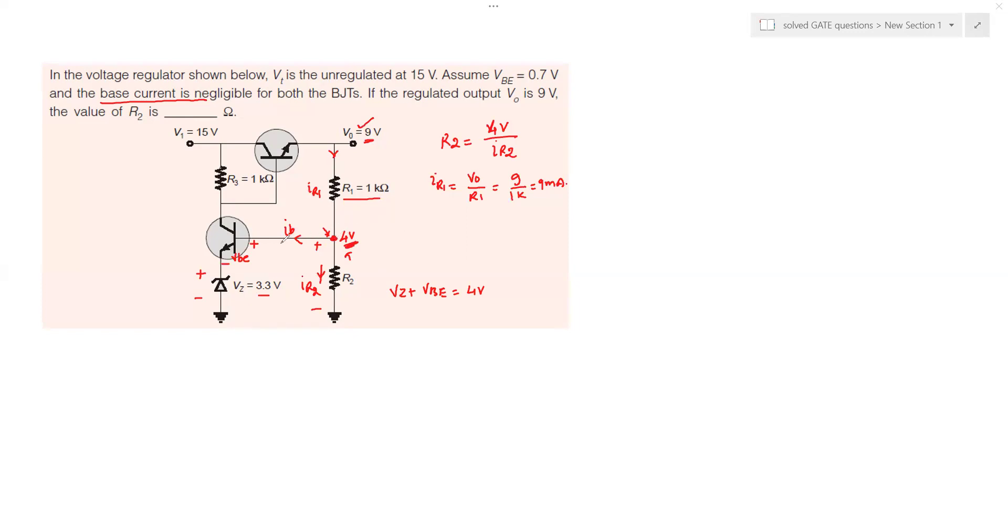Now since IB is negligible we can say that IR1 is approximately equal to IR2 and we have got the value of IR2. We know the value of voltage. R2 therefore would be 4 volt divided by 9 milliampere.